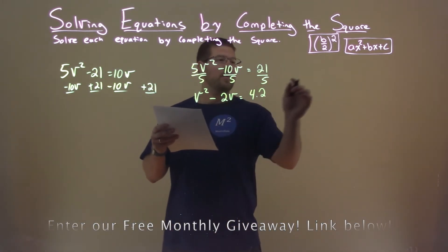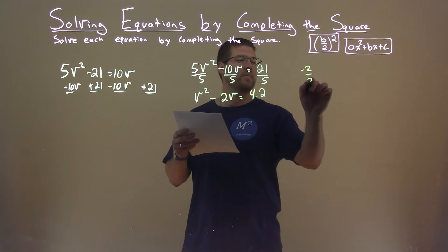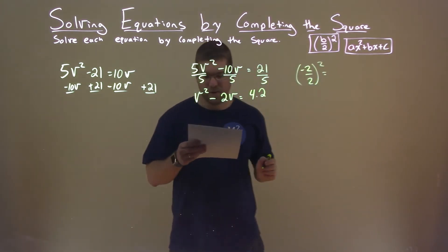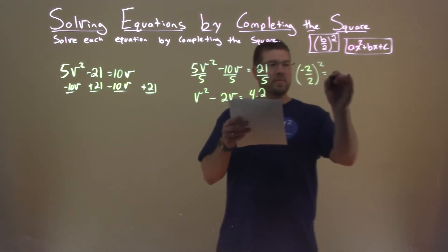Alright, so now I'm taking my b value, negative 2, I'm going to divide it by 2, I'm going to square it. A lot of 2's there. That comes out to be 1.